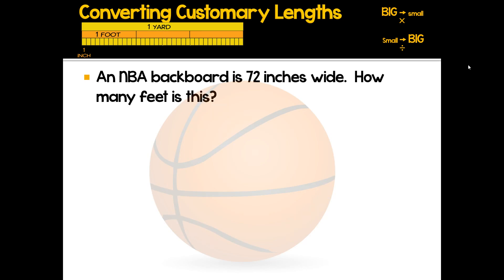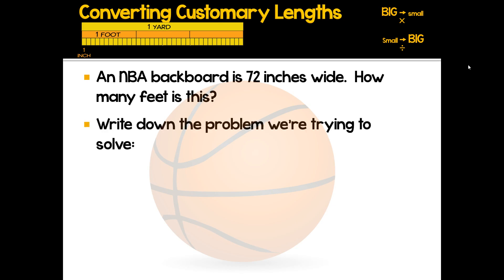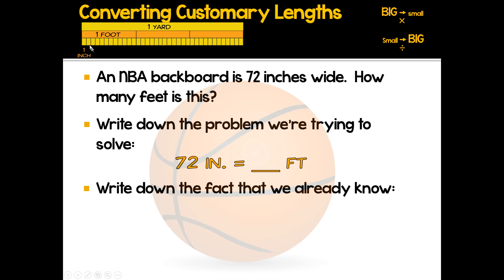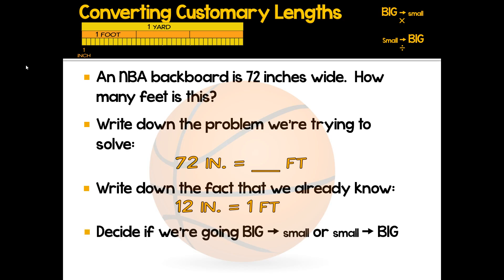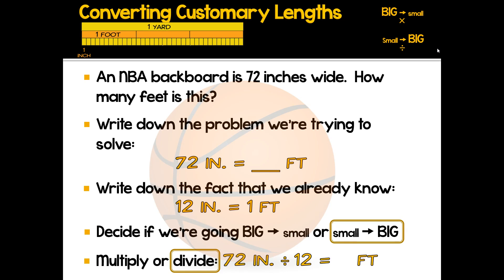An NBA backboard is 72 inches wide — how many feet is that? We write down: 72 inches equals how many feet. Looking at the graphic, we know there are 12 inches in a foot. Now, inches are super tiny and feet are bigger, so we're going small to big. When we go small to big, we divide. 72 divided by 12 equals six feet.